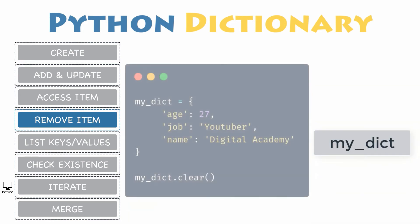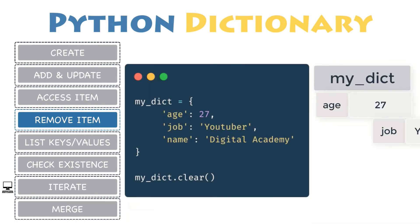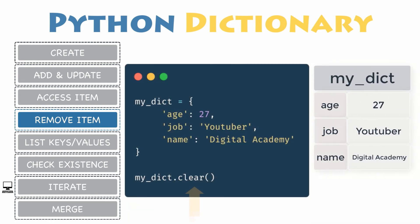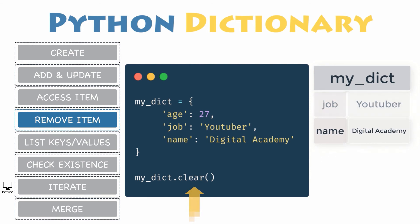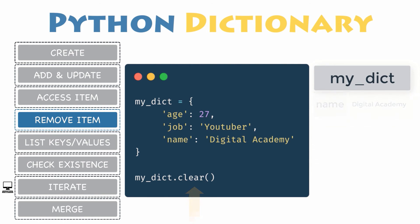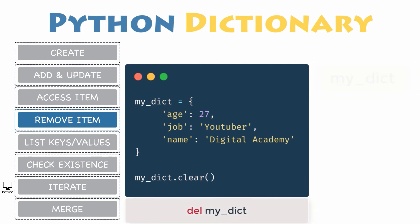All the items can be removed at once using the clear method, which will delete all keys and values from the dictionary. You can also use the DEL keyword to remove the entire dictionary itself.